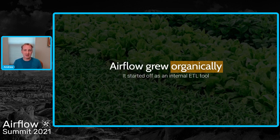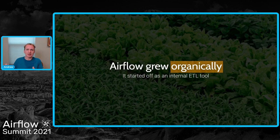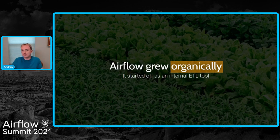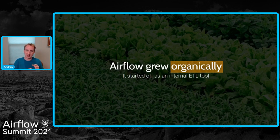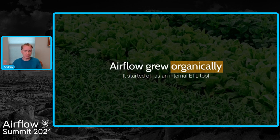Airflow was built inside Airbnb as pretty much an internal ETL tool, and it still bears some of the hallmarks of that design. Is that a bad thing? Absolutely not. Airflow was built and grew as its users demanded what they wanted - that's how you build software people want to use. The trade-off is that the architecture wasn't planned fully from the get-go, so you have a few nooks and crannies or problems that you have to go back and fix. A big part of being a mature open source product is understanding how to do that in a backwards-compatible fashion.